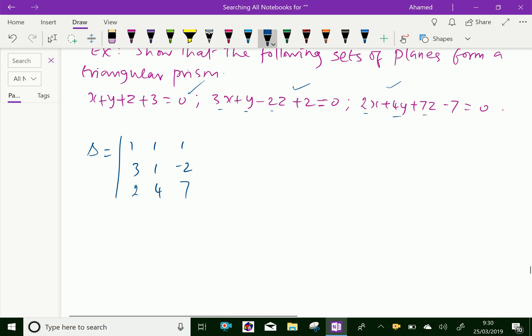2, 4, 7. Equal 1 into, 1 into 7 is 7, 4 into -2 is -8, that is plus 8, minus 1. And 3 into 7 is 21, and 2 into -2 is -4, plus 4.